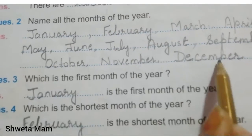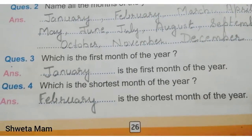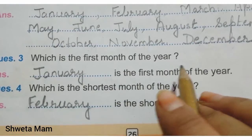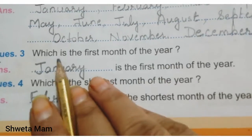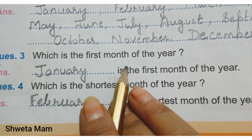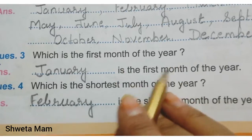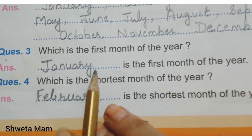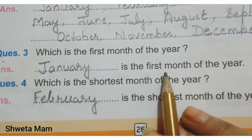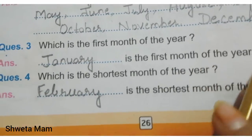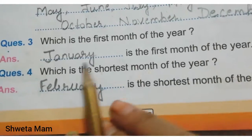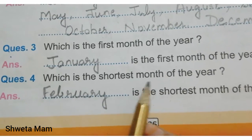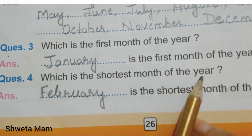Now the third question: Which is the first month of the year? January, J-A-N-U-A-R-Y. January is the first month of the year.